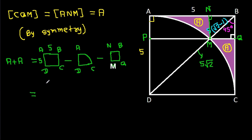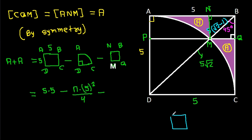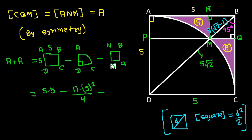AB is 5 and AD is 5, so the area of square ABCD is 5 × 5 = 25. The area of the quarter circle with radius DC = 5 is π × 5² / 4 = 25π/4. In any square, if the diagonal is d, the area is d²/2. So the area of square NBQM with diagonal 5(√2 − 1) is [5(√2 − 1)]² / 2. So 2A = 25 − 25π/4 − [5(√2 − 1)]² / 2.